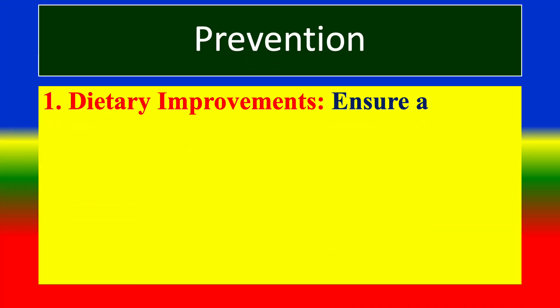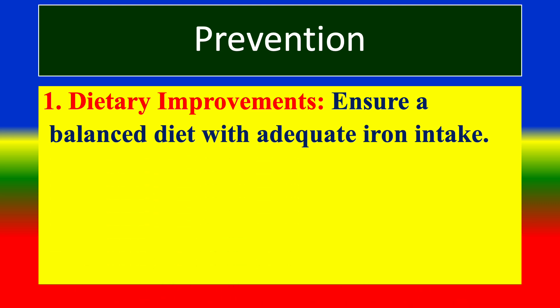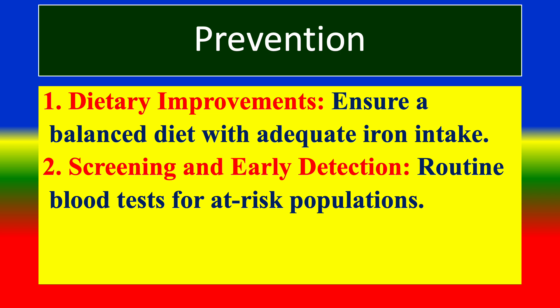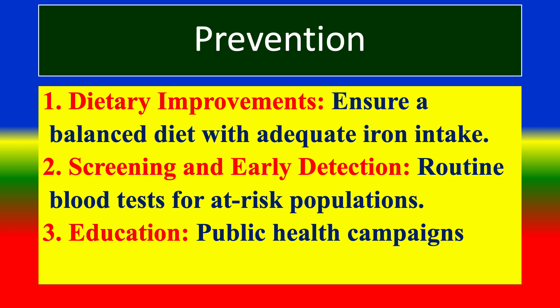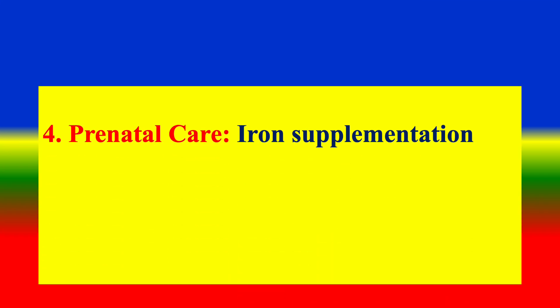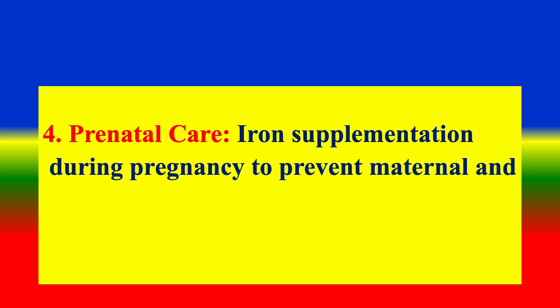Prevention strategies include: first, dietary improvement to ensure a balanced diet with adequate iron intake; second, screening and early detection through routine blood tests for at-risk populations; third, education through public health campaigns about the importance of iron in the diet; and fourth, prenatal care including iron supplementation during pregnancy to prevent maternal and fetal complications.